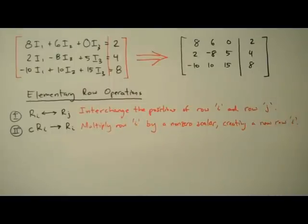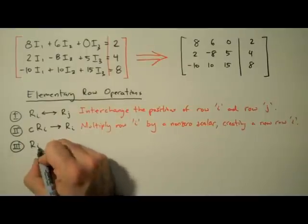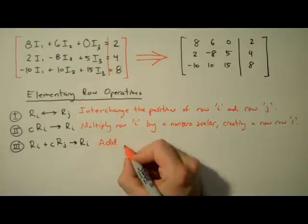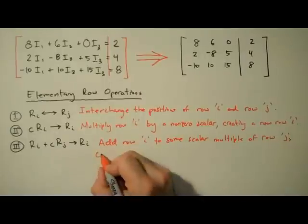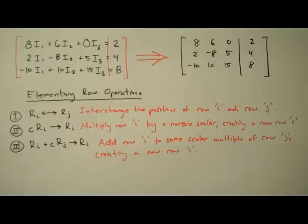Now the last tool in our ERO toolbox is called row addition. When we use row addition, we add row i to some scalar multiple of row j, creating a new row i. This one has been known to cause a few headaches.